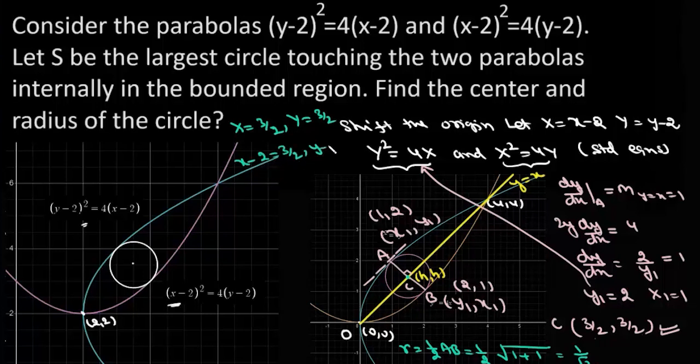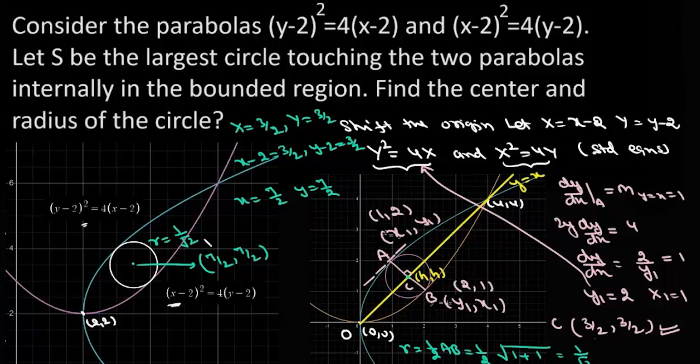So x is 7/2 and y is also 7/2, so the center of this circle is at (7/2, 7/2) and radius is 1/√2.